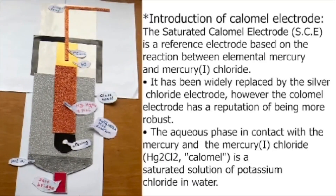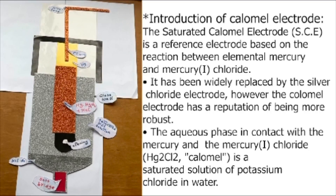The saturated calomel electrode, or SCE in short, is a reference electrode based on the reaction between elemental mercury and mercury chloride. The whole idea behind this is to figure out the potential through the concentration. The galvanic cell consists of two electrodes: reference and indicator. The reference is a constant, so we can always get the indicator through the reference. This is basically the whole purpose of this device.